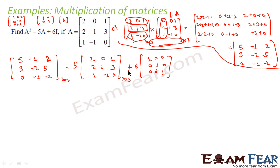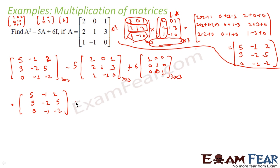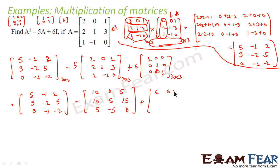So the expression becomes: [5, -1, 2; 9, -2, 5; 0, -1, -2] minus 5×[2, 0, 1; 2, 1, 3; 1, -1, 0] plus 6×[1,0,0; 0,1,0; 0,0,1]. Multiplying out: 5A gives [10, 0, 5; 10, 5, 15; 5, -5, 0], and 6I gives [6, 0, 0; 0, 6, 0; 0, 0, 6].